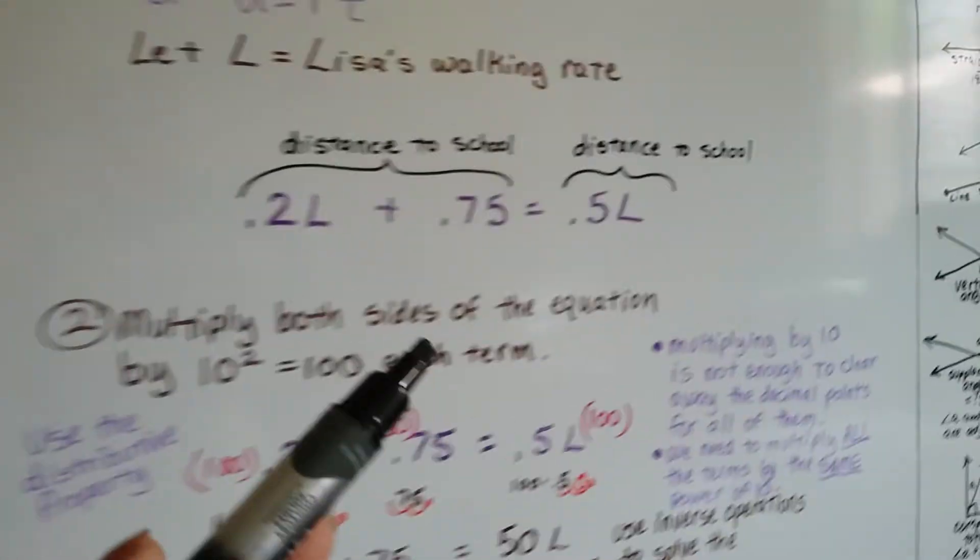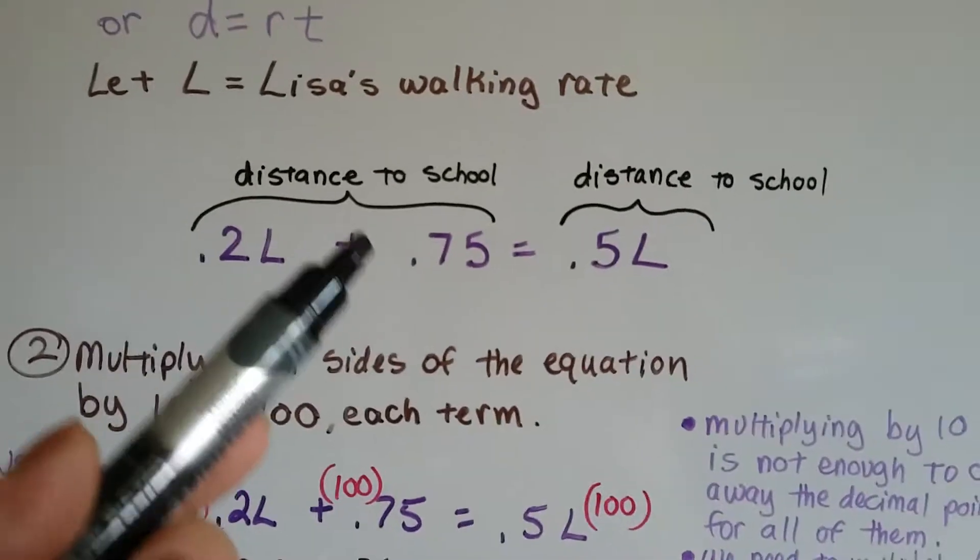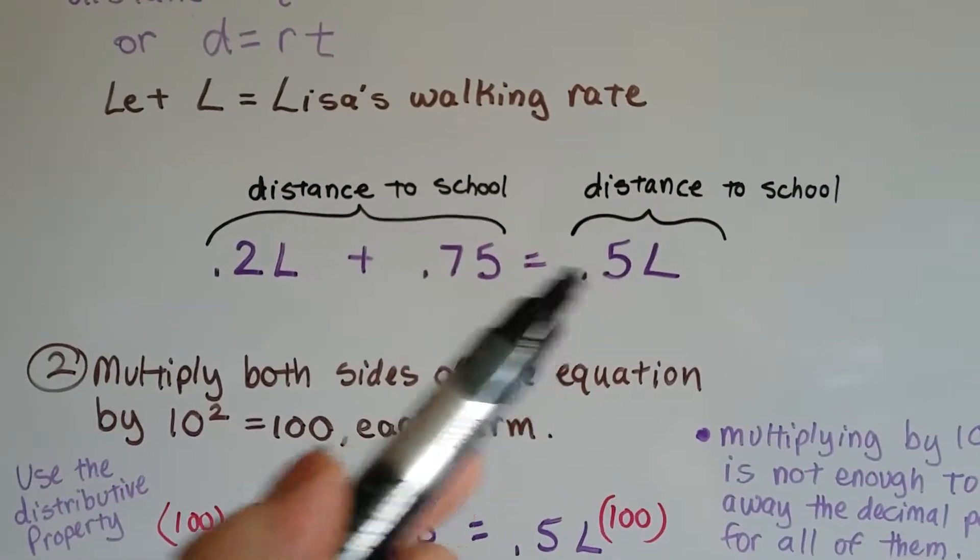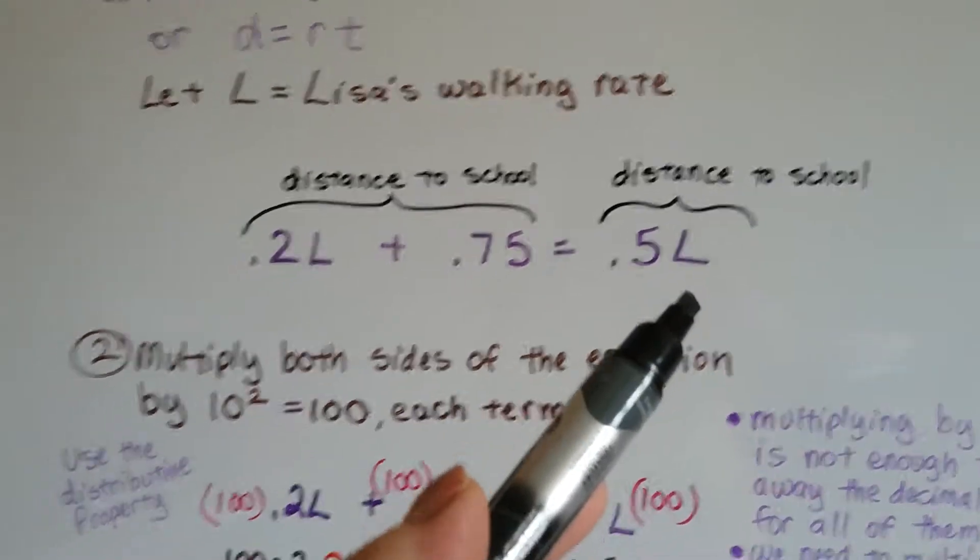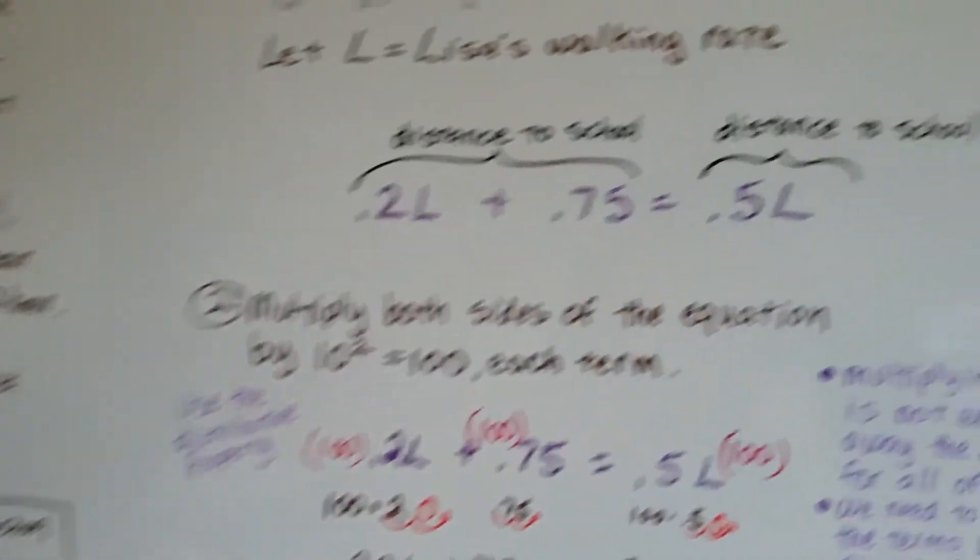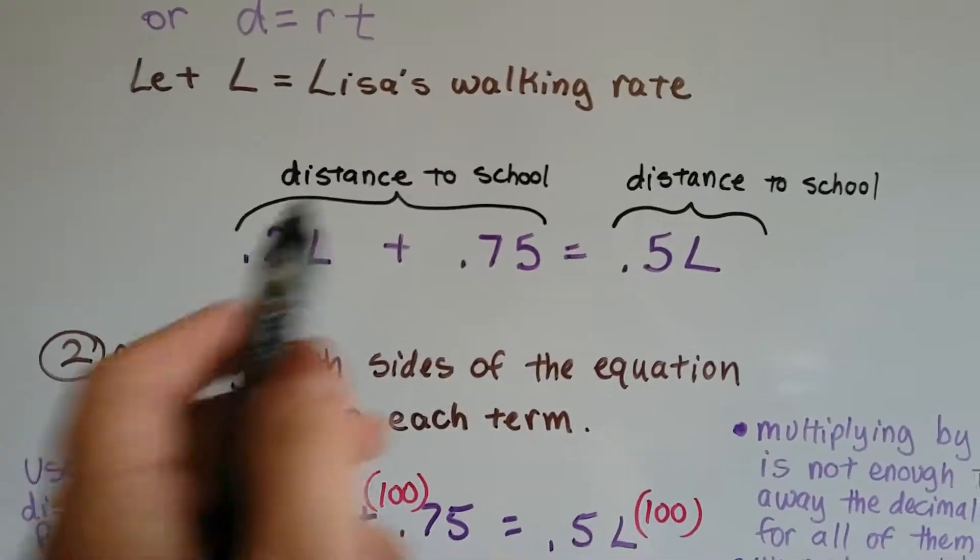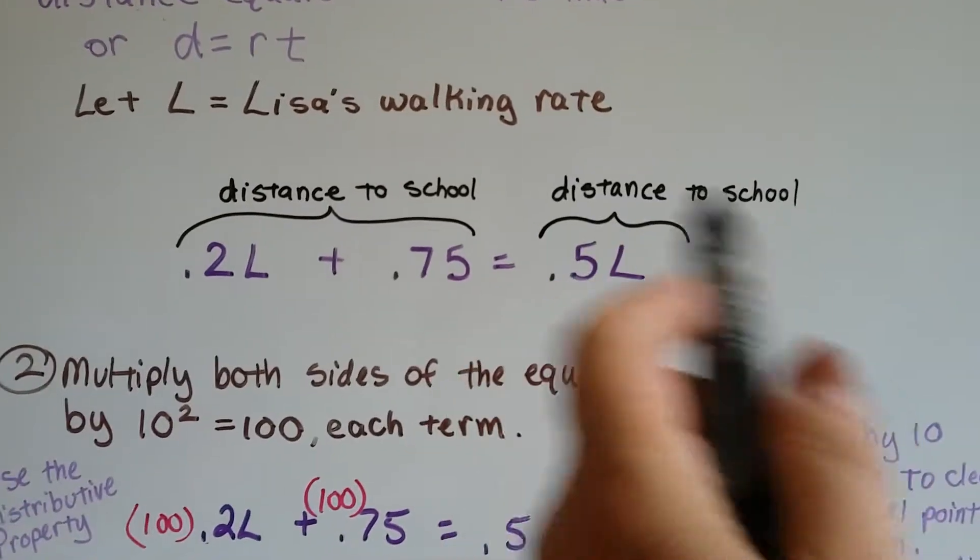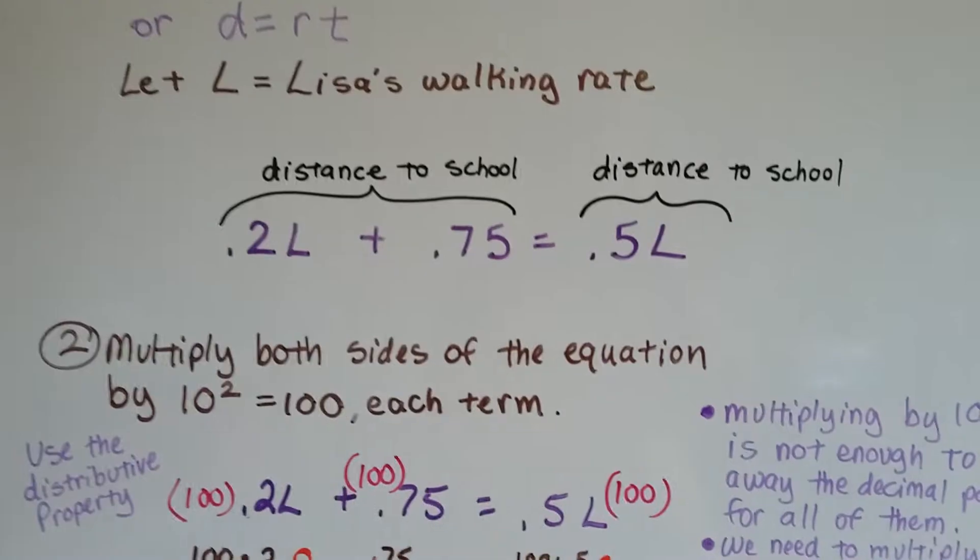So we put that in our equation. The .2L plus the .75 are the same thing. They equal the .5. So now we've got our equation. This is a distance to school, and that's the distance to school. And they both equal the same thing.